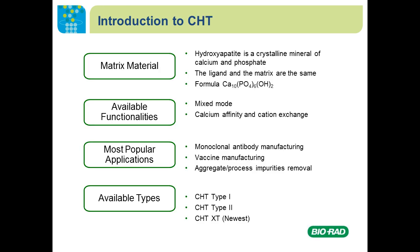CHT is hydroxyapatite — a crystal mineral composed purely of calcium and phosphate. The ligands and the matrix are the same; there are no pendant ligand groups. It is a mixed-mode resin with both calcium acidity and cation exchange, similar to IMAC resins like Nubia IMAC except with calcium instead of copper, nickel, or cobalt. CHT is widely used in bioprocessing for many licensed processes. Most popular applications are monoclonal antibodies, vaccine manufacturing, and removal of aggregates and process impurities. It's available in type 1, type 2, and the newest CHT XT.